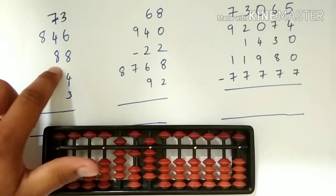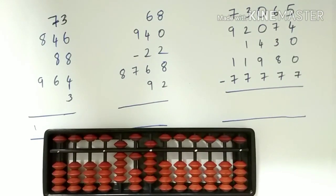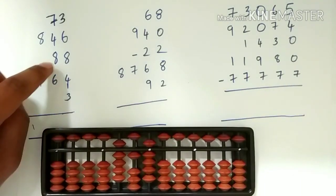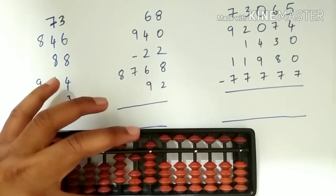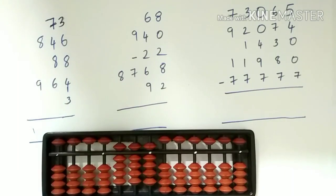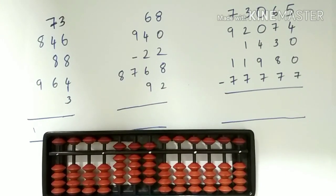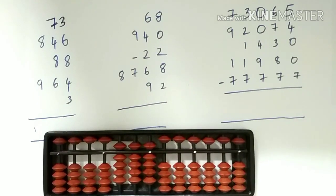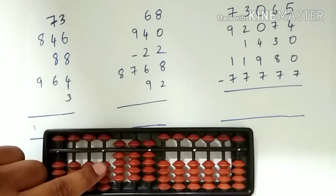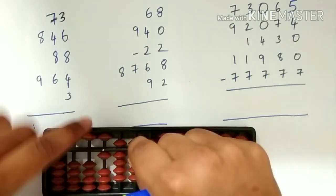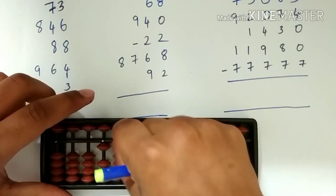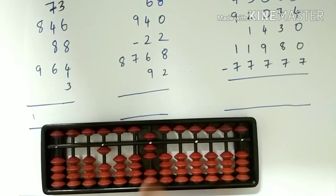Next we have to add 88, which is a 2 digit number. So we have to place 8 on the 10th rod, and then 8 on the units rod. We have to use big friends concept.